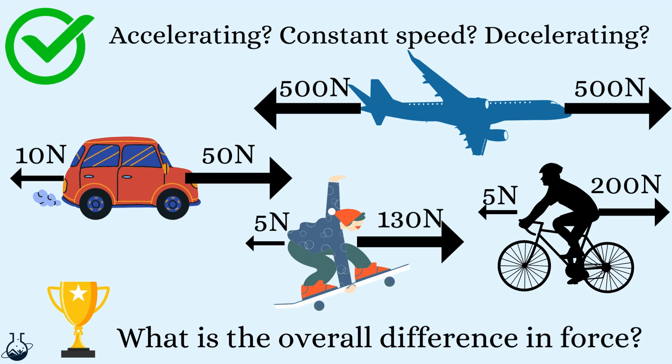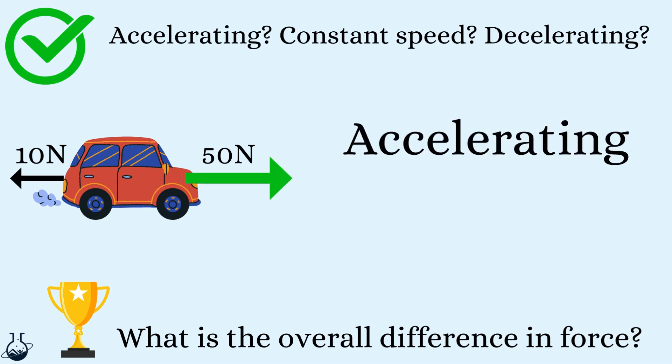Let's see what you came up with then. This car has a greater thrust than air resistance, so it's accelerating. The difference in force is calculated by the large force take away the small force. In this case, 50 take away 10, which is 40 newtons. So the car is accelerating with a resultant force of 40 newtons.